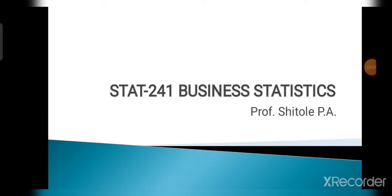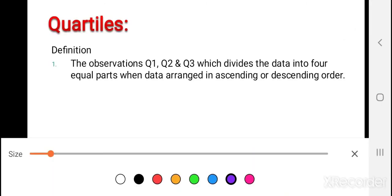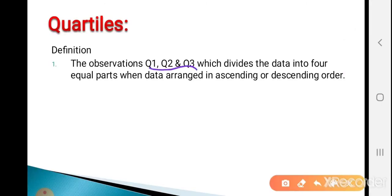Hello everyone, today we are going to learn the next measure of central tendency — quartiles. The observations Q1, Q2, Q3 which divide the data into four equal parts when data is arranged in ascending or descending order.